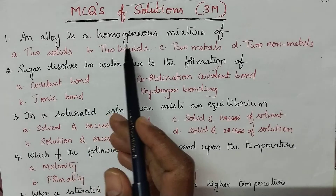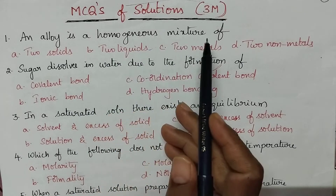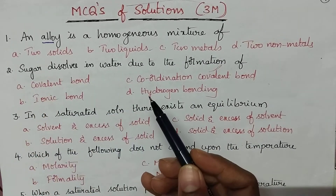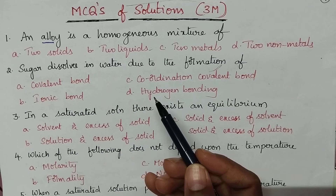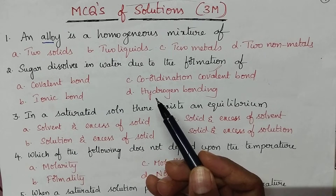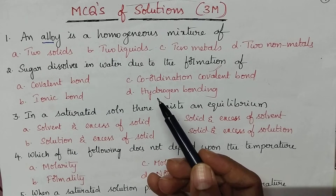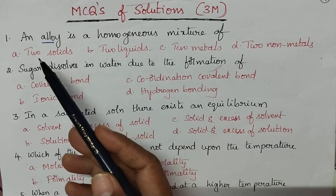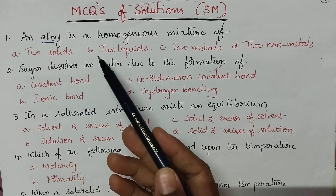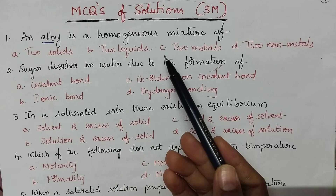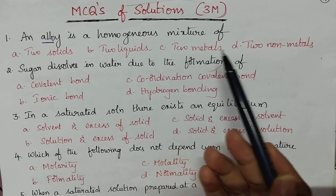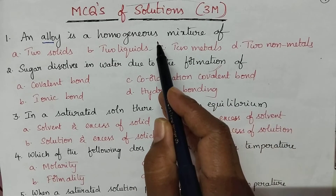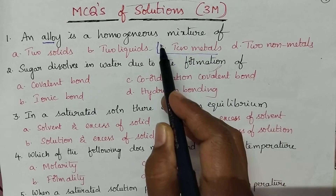An alloy is a homogeneous mixture obtained by mixing two or more substances in which one must be a metal. In the given options, option A is two solids, B is two liquids, C is two metals, and D is two non-metals. So option C is the right answer.